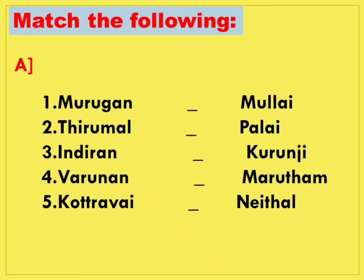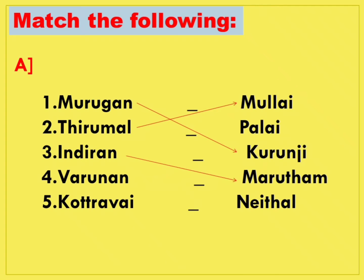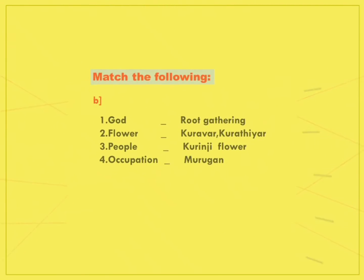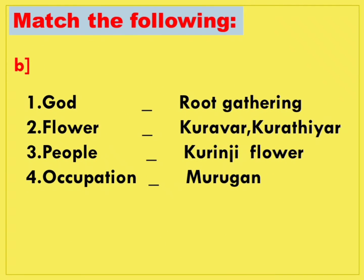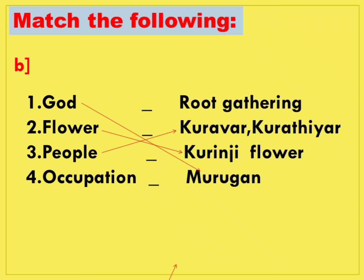Next, the maps are following. Murugan — Kurunji. Thirumal — Mullai. Indiran — Marudam. Varunan — Naital. Kotravai — Palai. God of Kurunji is Murugan, flower is Kurunji flower. People are Kuravar and Kuratir, occupation is root gathering.